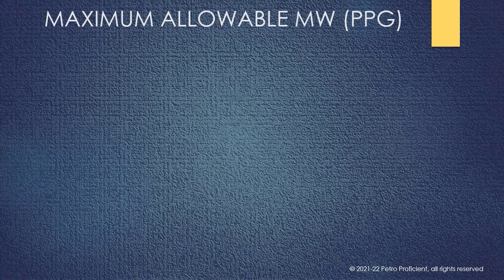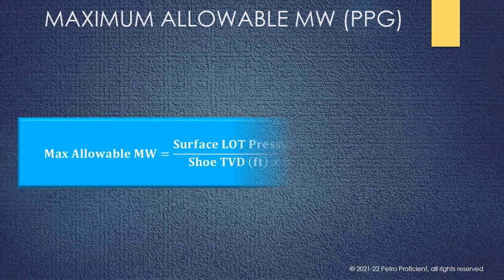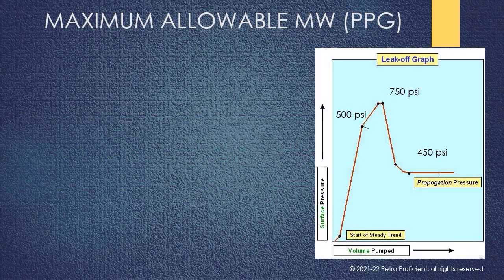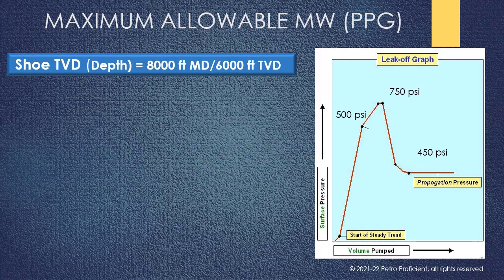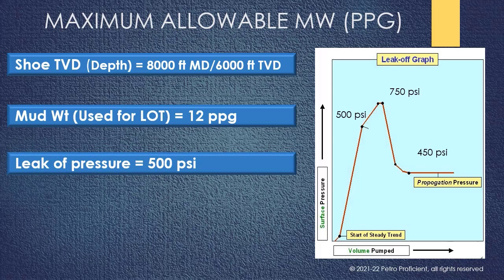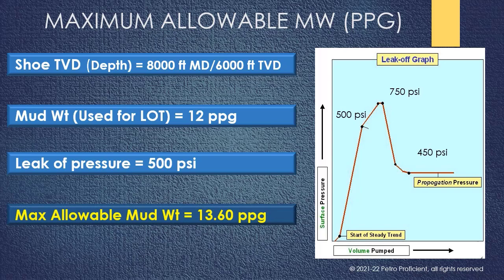To calculate MASP, we need to first calculate the maximum allowable mud weight using the given mathematical equation. Consider a well with casing shoe depth of 6000 feet; mud weight used is 12 ppg, and leak-off pressure recorded at surface is 500 pounds per square inch. Using the mathematical equation, maximum allowable mud weight can be calculated as 13.6 ppg.